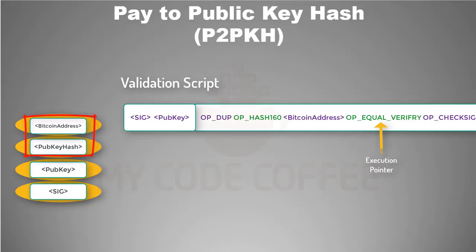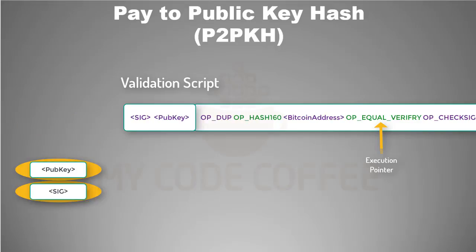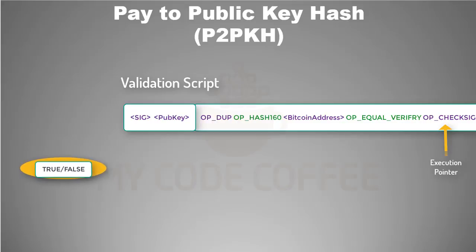Ideally they should be the same, because if they are not, it means the Bitcoin address in the locking script was generated from a different public key, and so the transfer of funds should not happen. But if they are the same, it means that the Bitcoin address in the locking script was generated from the same public key that is present in the unlocking script. In this case we remove these two elements, then move the pointer to the last element, which verifies the digital signature with the help of the public key. We pop these two elements and push the result to the stack.